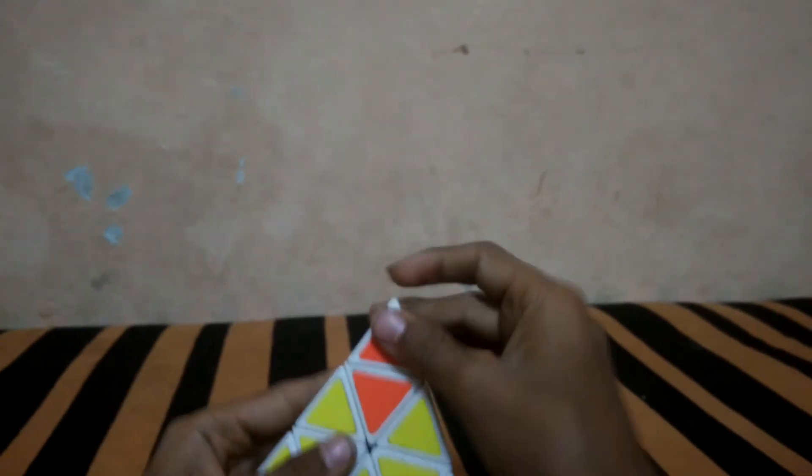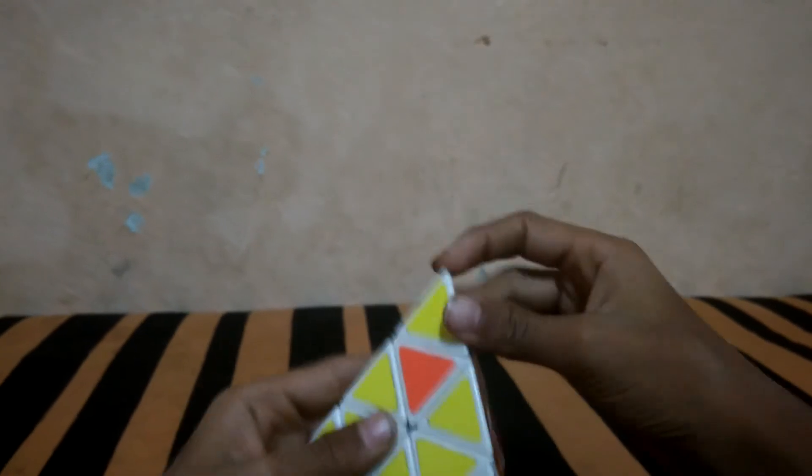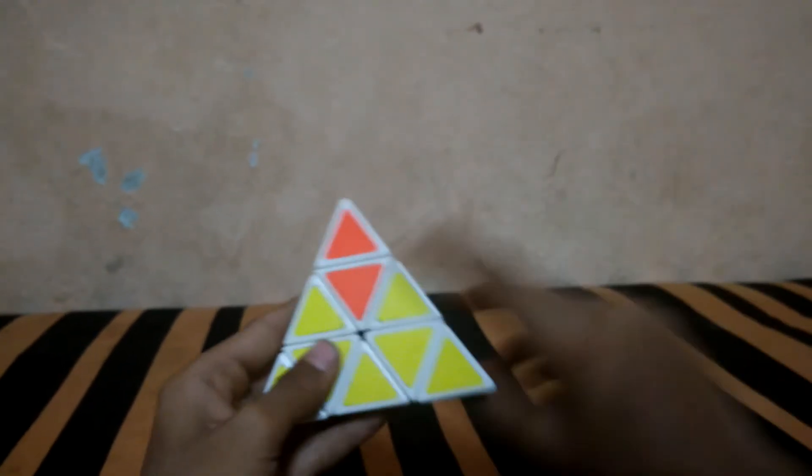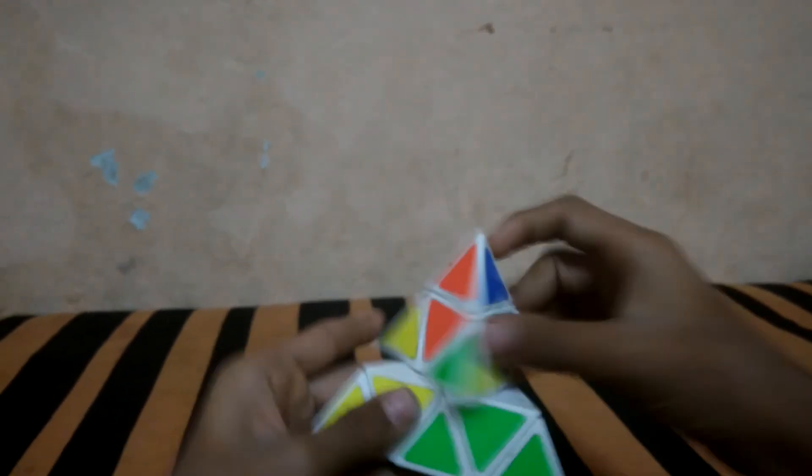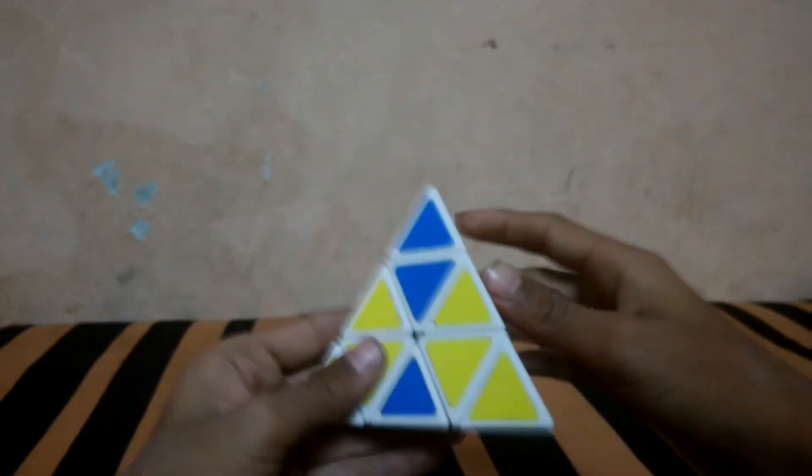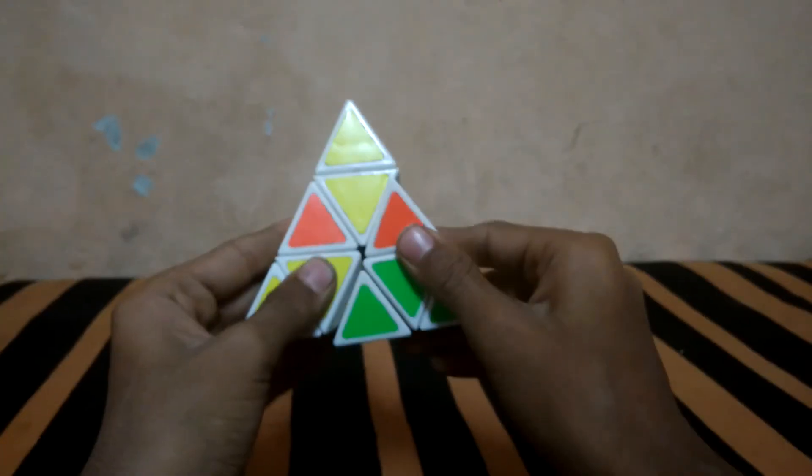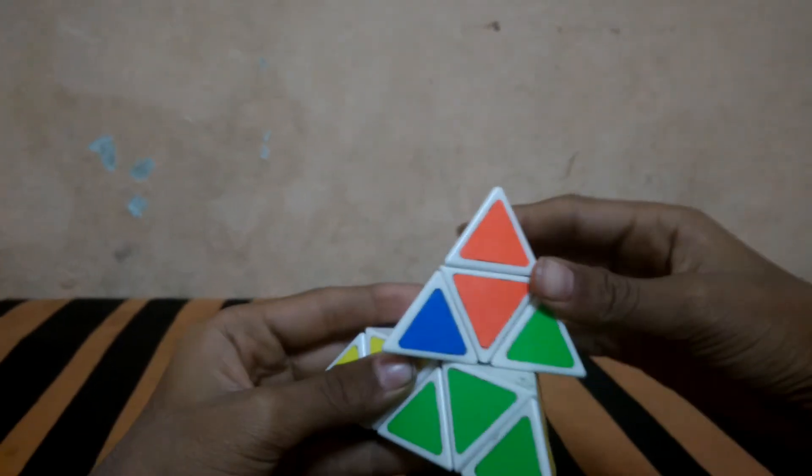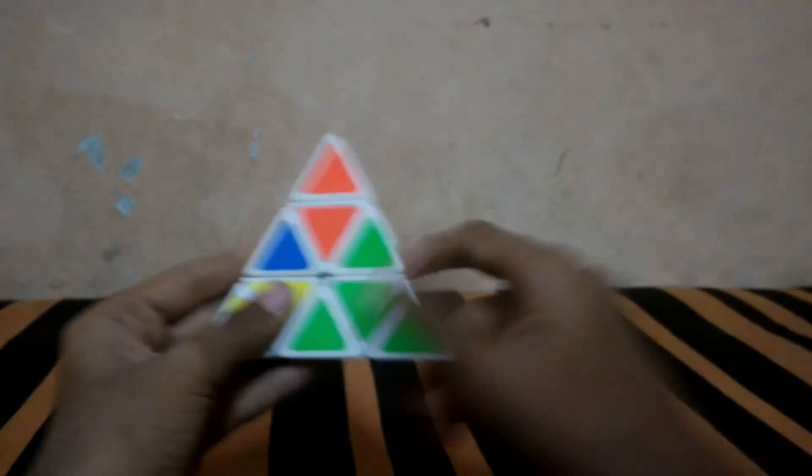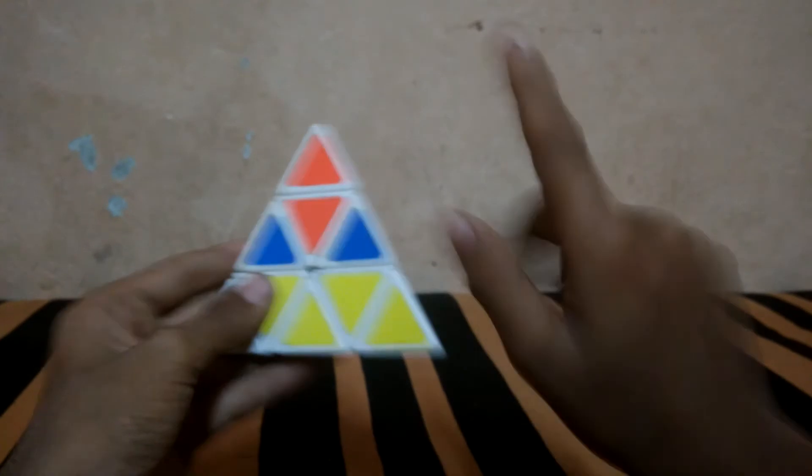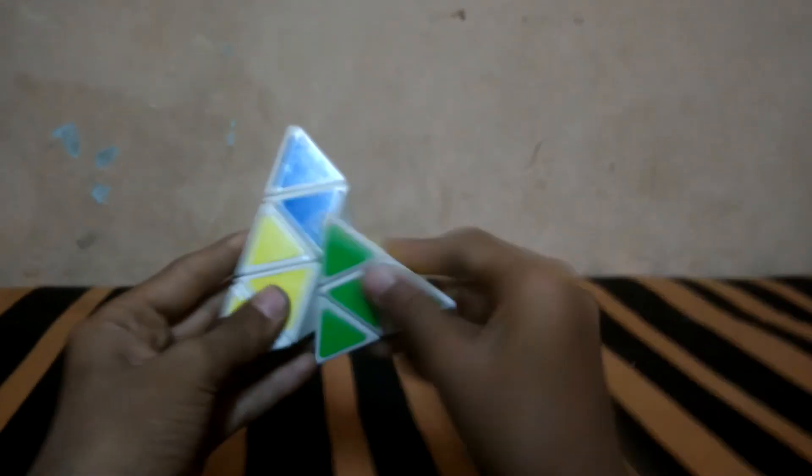If they become like this or like this, same formula: R U R' U R U R'. Again the same formula: R U R' U R U.